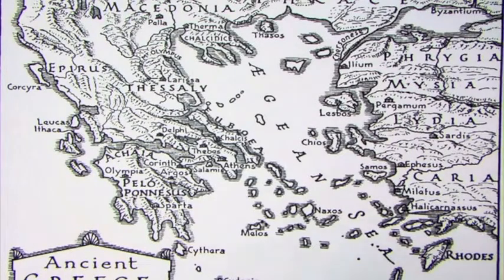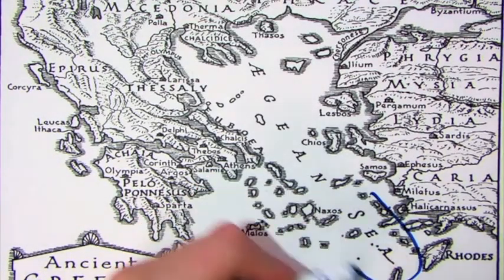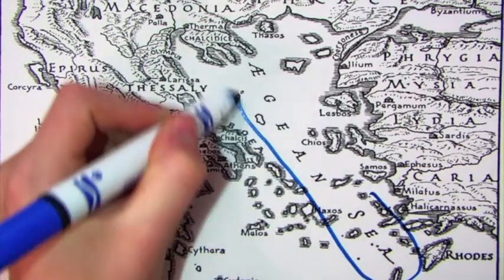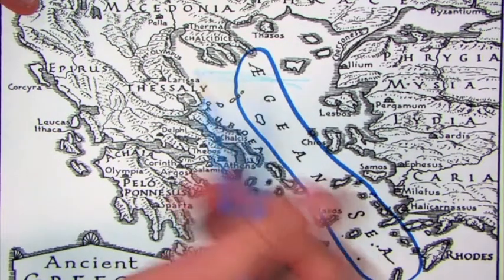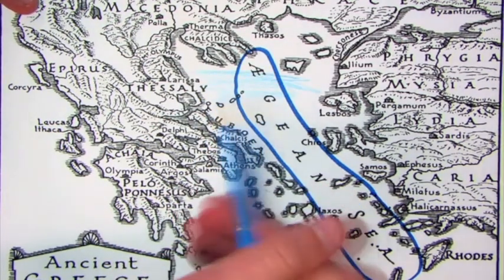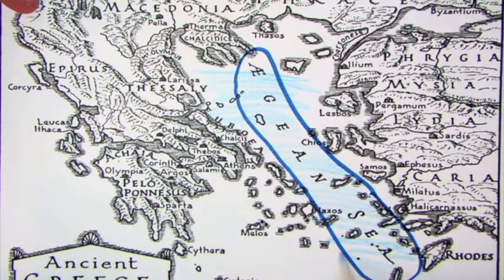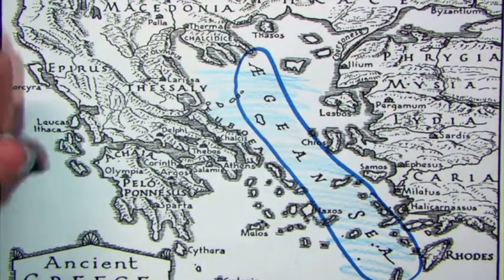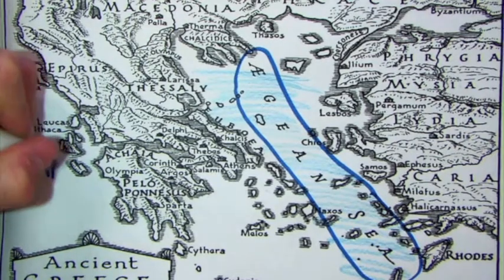Starting off, we have the Aegean Sea right in the middle, in blue. And then we have our other sea, the Aegean Sea, to the west, in blue.